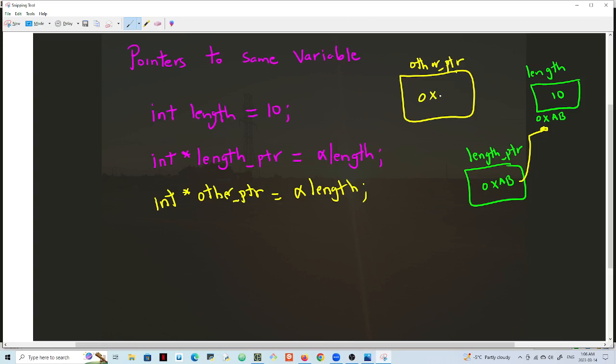So what this will do, you will have this other pointer here, other_ptr, and it will also hold 0xAB, which will be pointing here. Now there is one other way to do the same stuff.